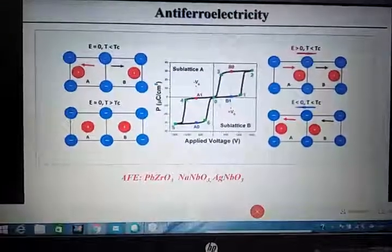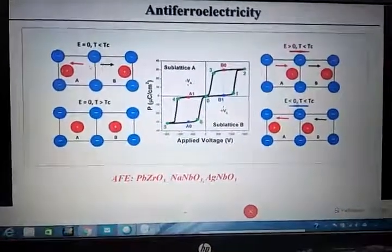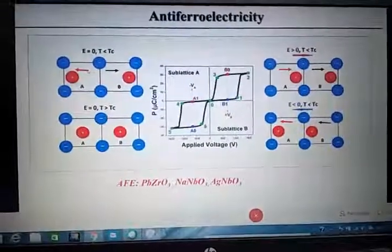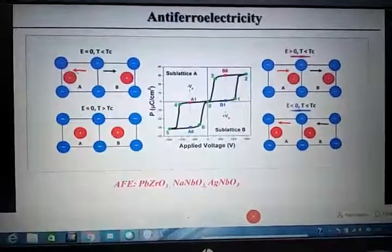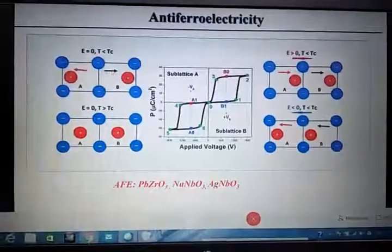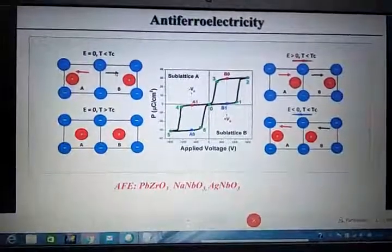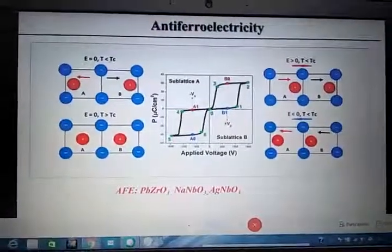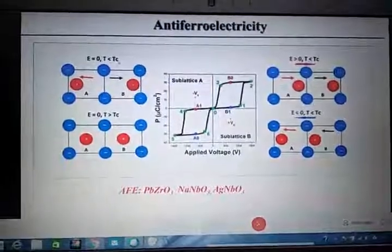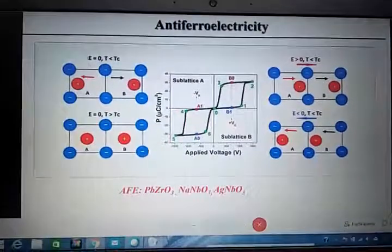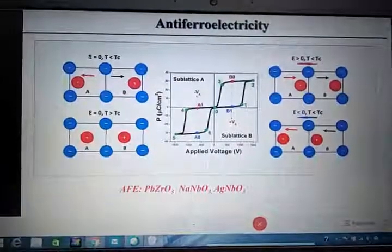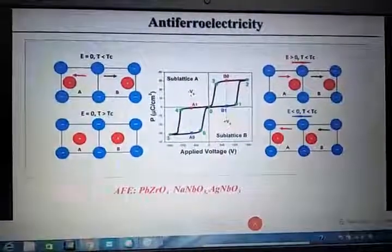If you see, here are four sub-cells. Let us suppose dipole moment in one cell is around this direction and second is around this direction. If T is less than Tc and when we do not apply any electric field, and for greater than Tc...